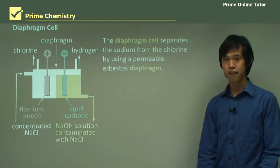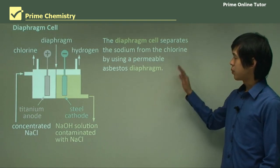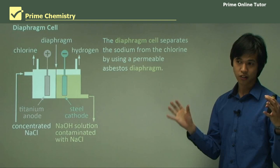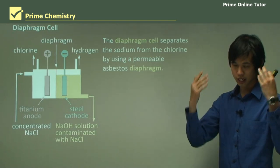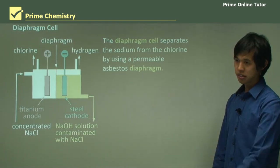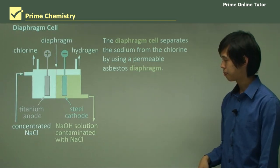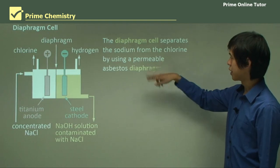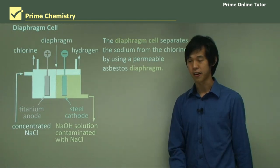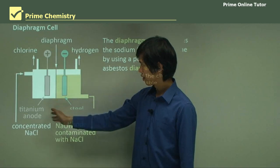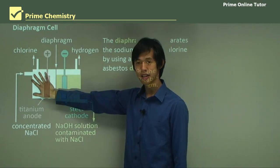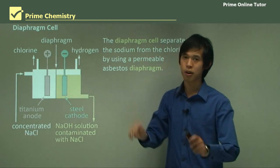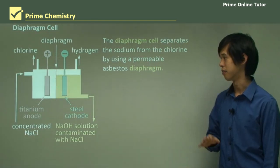The diaphragm cell is the alternative. Mercury is bad for you — it's a heavy metal that causes mental disorders — so we moved to the diaphragm cell. The diaphragm cell separates the sodium from the chloride using a permeable asbestos diaphragm. The brine is on one side, pure water on the other side, separated by this semi-permeable asbestos membrane.